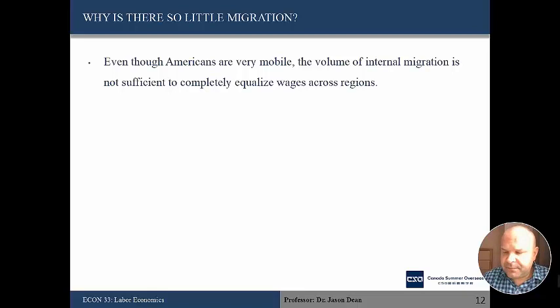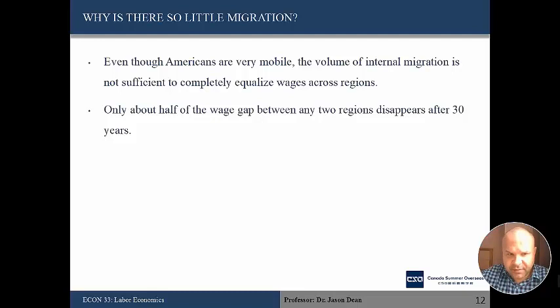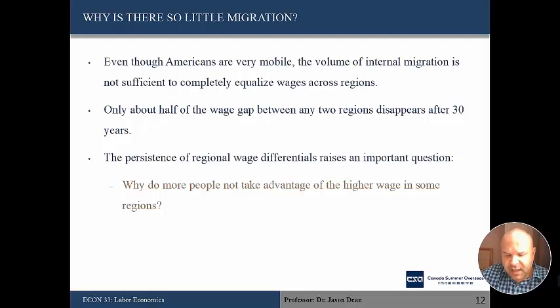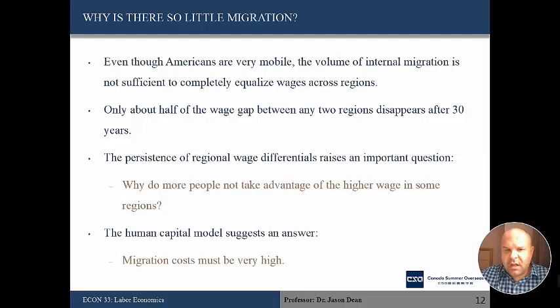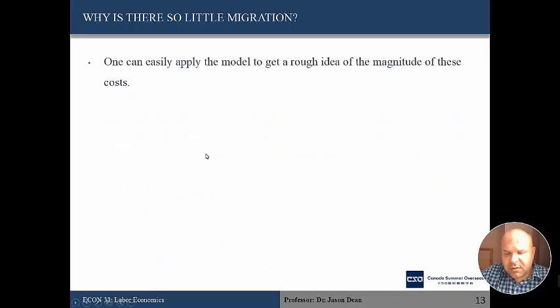Although Americans move a lot, the volume is not sufficient to completely equalize wages across regions. Only about half of the wage gap between any two regions disappears after 30 years — there is significant persistence in regional wage differences. This raises a question: why do people not take advantage of higher wages in some regions? Our human capital model provides a simple answer — migration costs can be very high. We're going to tease out an example of how large these transaction costs could be.